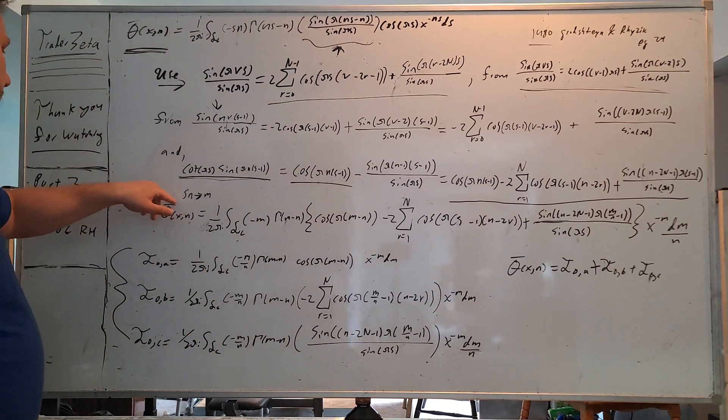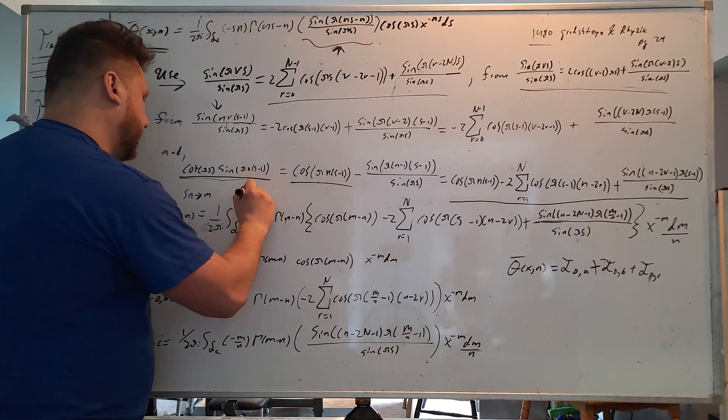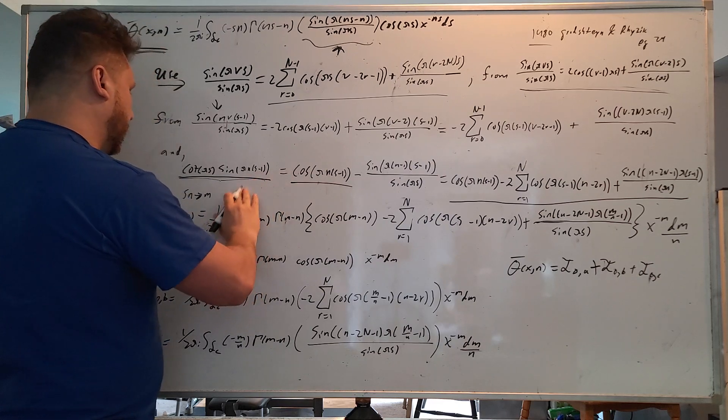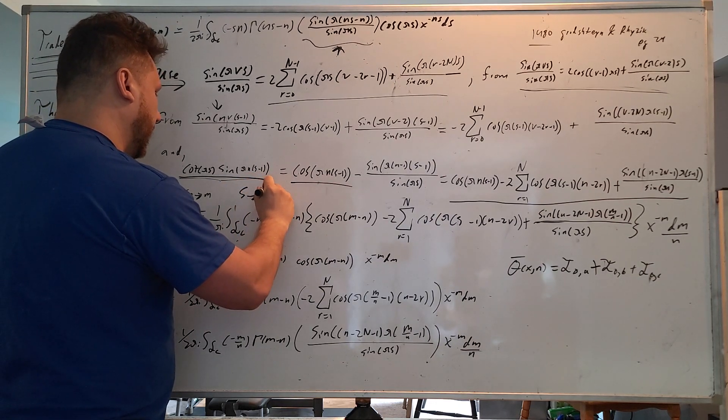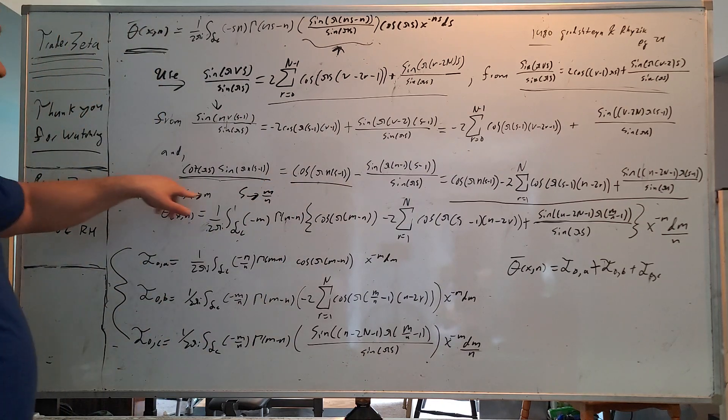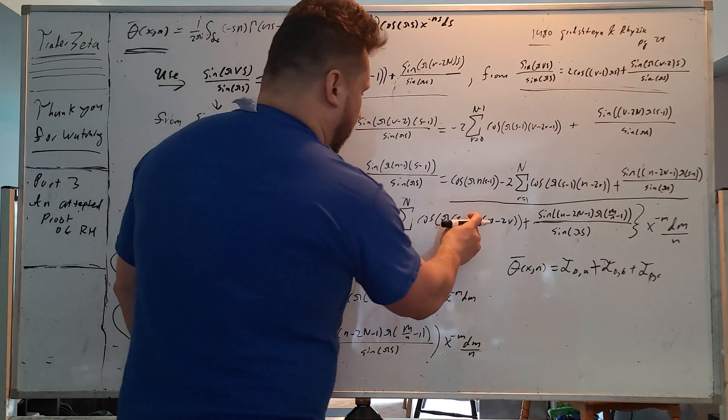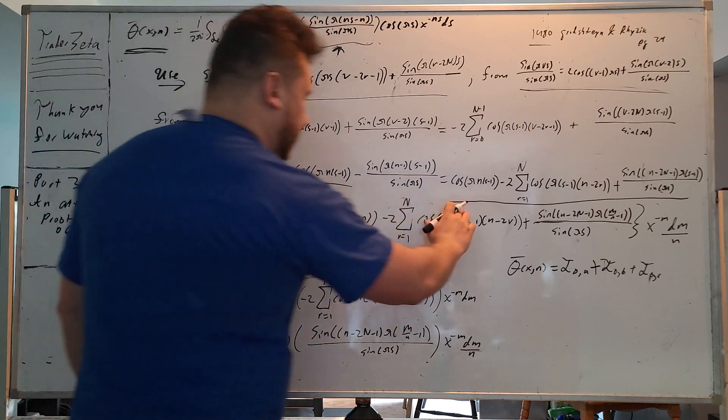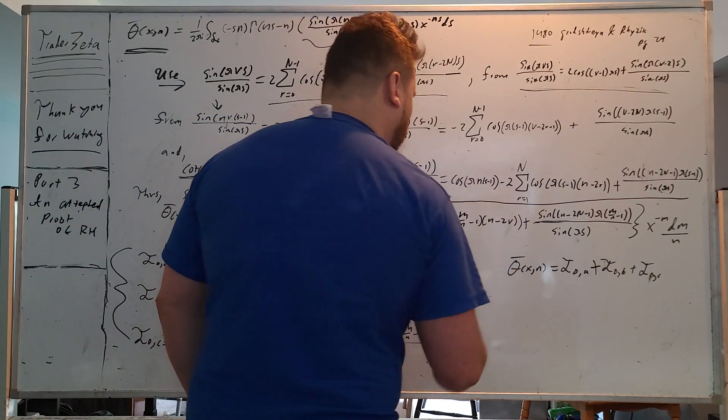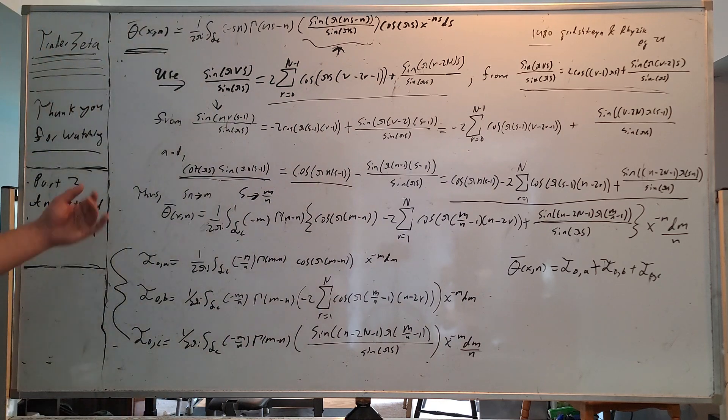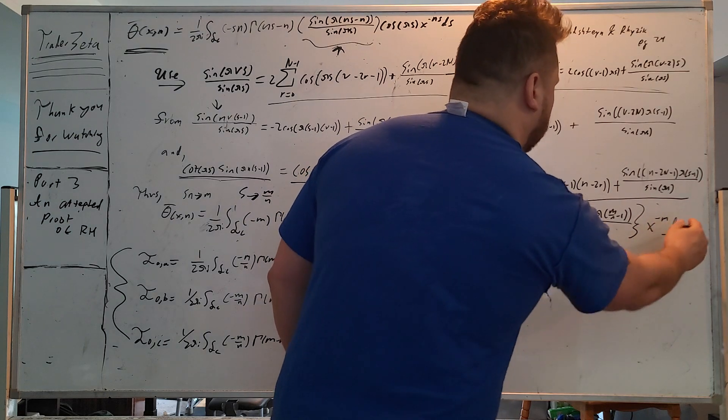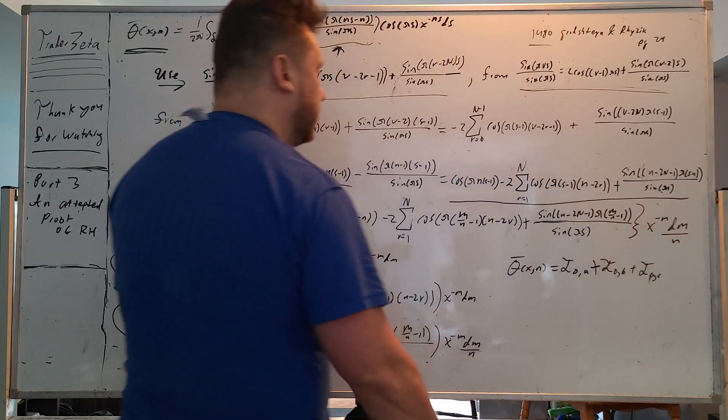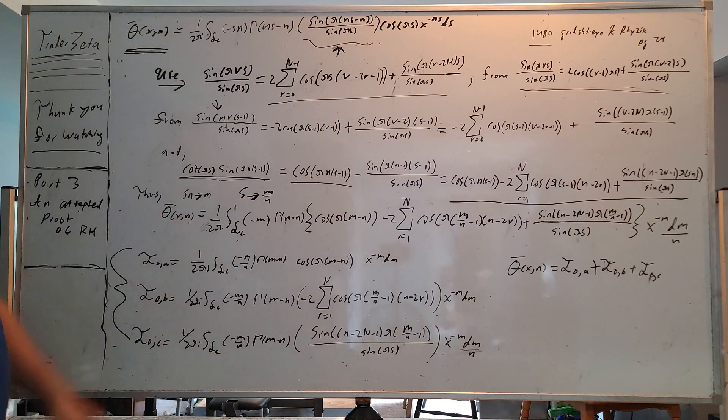But we can say, look, we have s goes to m divided by n. So that's the same thing. We're just doing a bit of algebra there. And everything plops in very nicely. So you have m divided by n. So now we have everything in terms of m. And we have x to the minus m dm divided by n. And because it was ds, we have to use this right here.